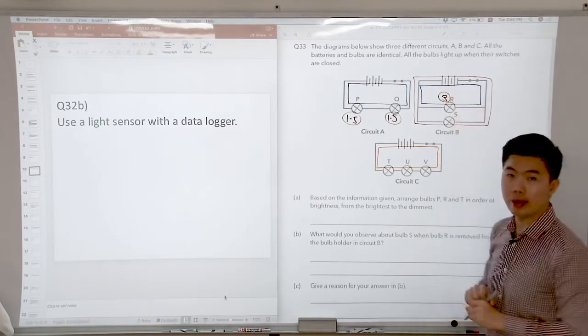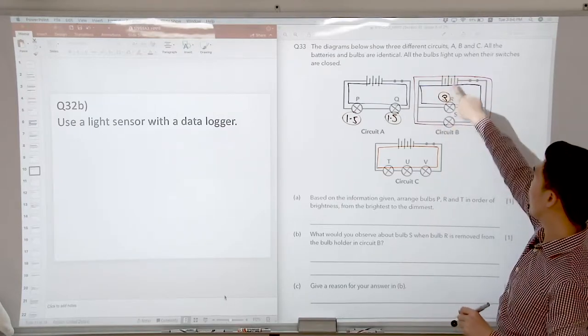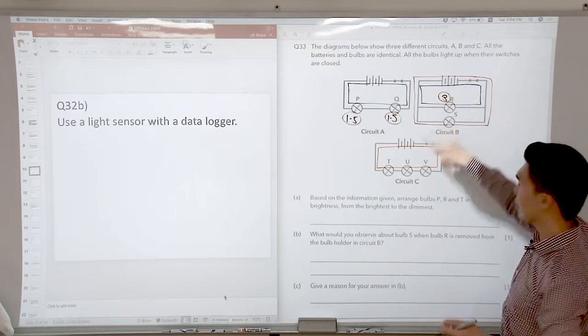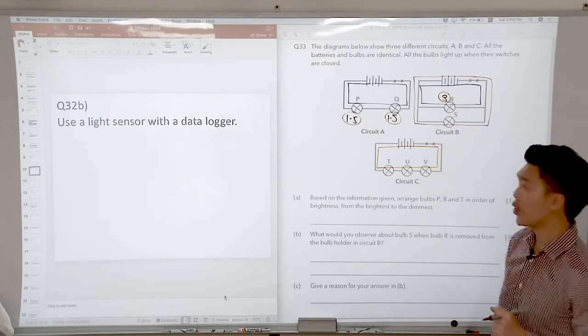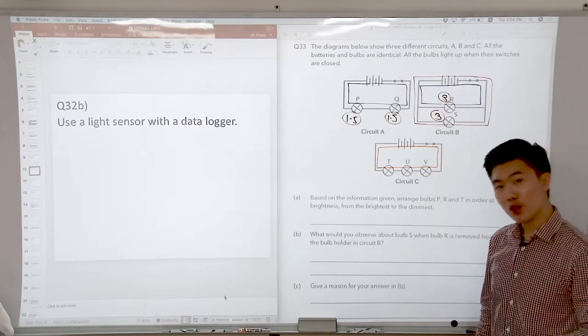Let's look at the one below it, bulb S. So we trace the red line here and we notice that there are three batteries in the red line. How many bulbs are there? One bulb as well. So it doesn't need to share. The power received by S is also going to be three.